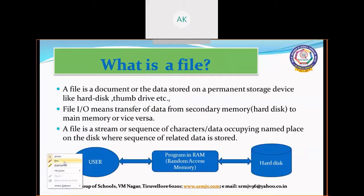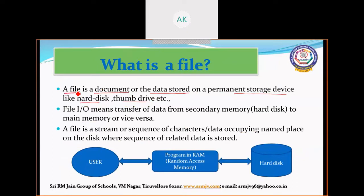What is a file? A file is a document that is used to store data on permanent storage devices like a hard drive or thumb drive. Normally a file is used to store contents. File input and output operations transfer data from your secondary memory — that is your hard disk — to main memory, and vice versa. That is, the transfer of data will happen from RAM to hard disk and back from hard disk to RAM.